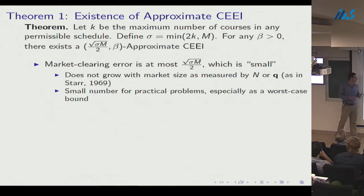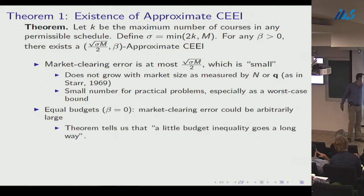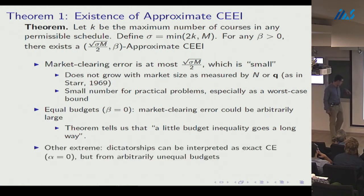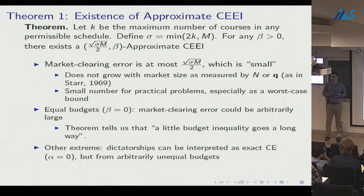Second, market clearing error is small as an actual number for practical-size problems, especially as a worst-case bound. With equal budgets (beta equals zero), market clearing error could be arbitrarily large — so the theorem tells us a little budget inequality goes a long way. At the other extreme, a dictatorship can be viewed as competitive equilibrium from wildly unequal incomes: Alice's budget dwarfs Betty's, which dwarfs everyone else's.